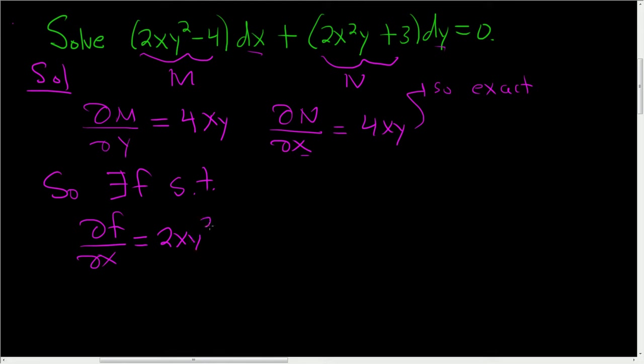So 2xy² - 4 and the partial derivative of f with respect to y is equal to big N. So 2x²y + 3. That's what it means for the equation to be exact.